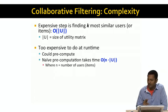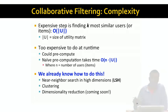So how do we deal with this? In previous lectures, we looked at techniques for near-neighbor search in high dimensions — for example, locality sensitive hashing (LSH). We can use something like LSH to take an item and quickly find a set of near-neighbors to that item, or take a user and find a set of near-neighbors to that user, and do that in advance. In practice, you might do something like this once a day or once every few hours.